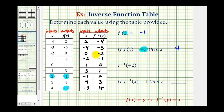So this table here should help us on these last two questions. To evaluate f inverse of negative two, we're trying to find the output of the inverse function when the input is equal to negative two, or the x value is equal to negative two. So here's the x value of negative two for the inverse function, and notice how the output is negative one. Therefore, f inverse of negative two is equal to negative one.